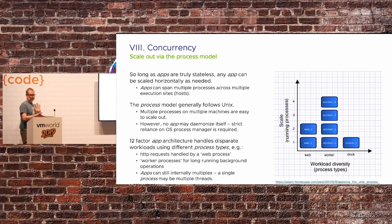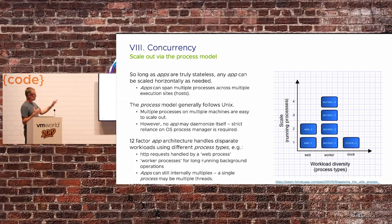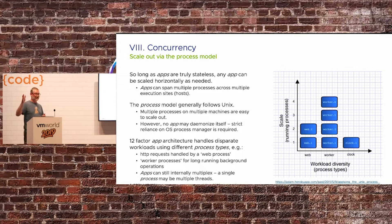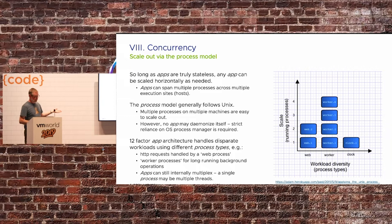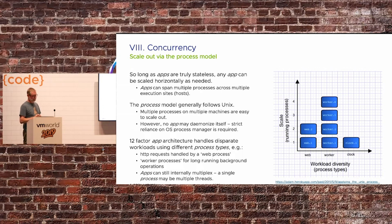Eighth: concurrency. We want these applications to be stateless, and your process model is going to follow the Unix model — because that's the best model. 12-factor app architectures handle different workloads using different process types: a web-type process or a worker-type process. We want those different types of processes to scale independently of each other.